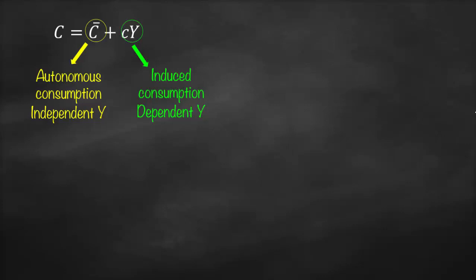This little c is called marginal propensity to consume (MPC). So what's the definition of marginal propensity to consume? It means that for each additional one dollar in income, how much we're going to consume out of it. Therefore, MPC is always between zero and one.